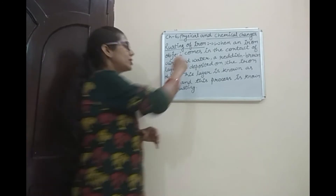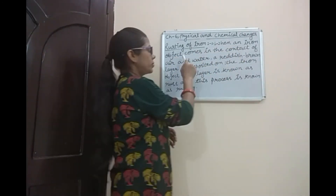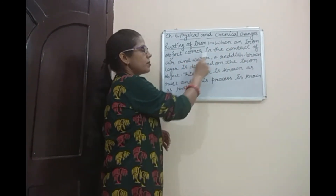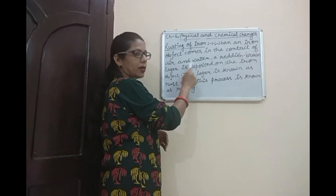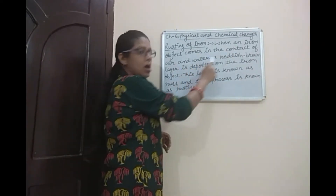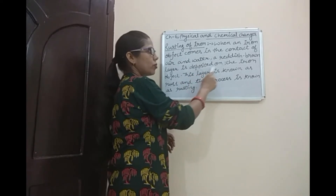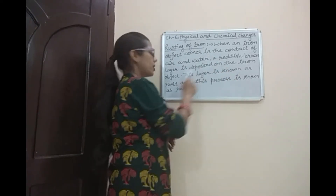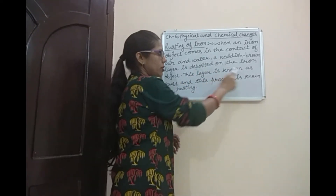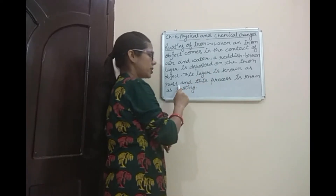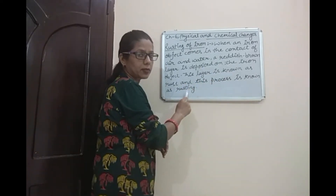Rusting of iron means when an iron object comes in contact with air and water, a reddish brown layer is deposited on the iron object. This reddish brown layer is known as rust, and this process is known as rusting.